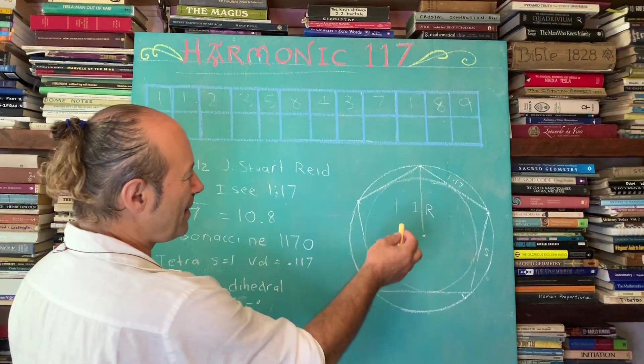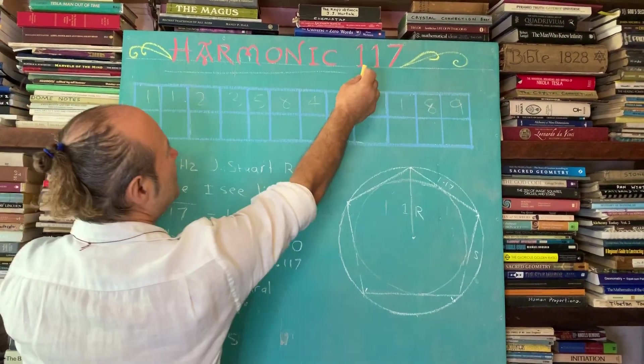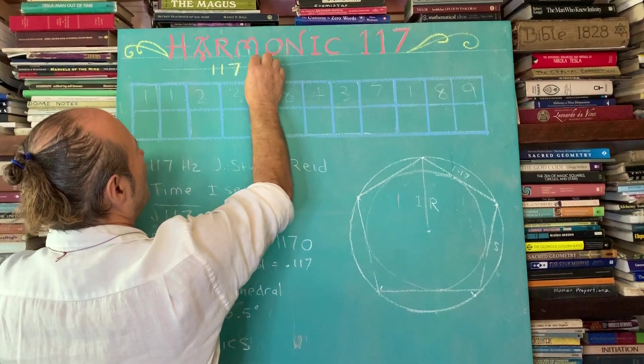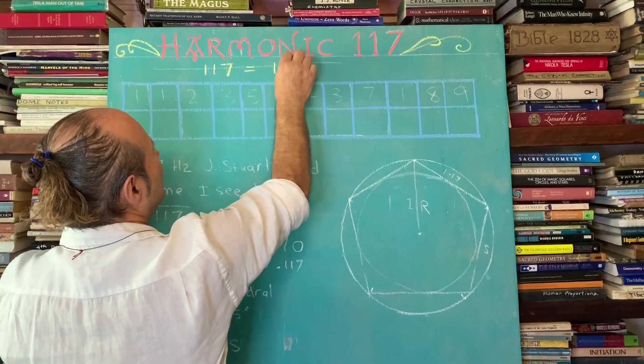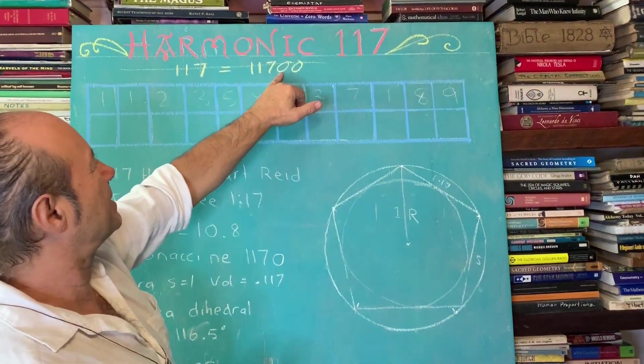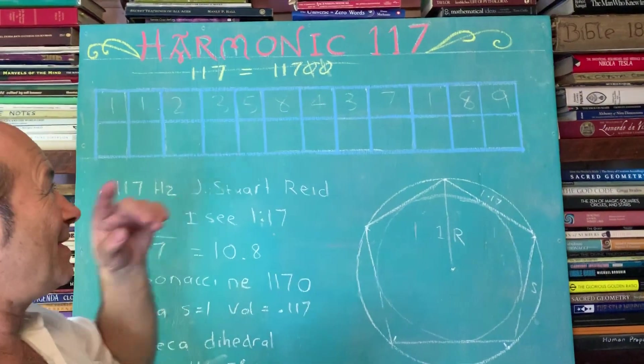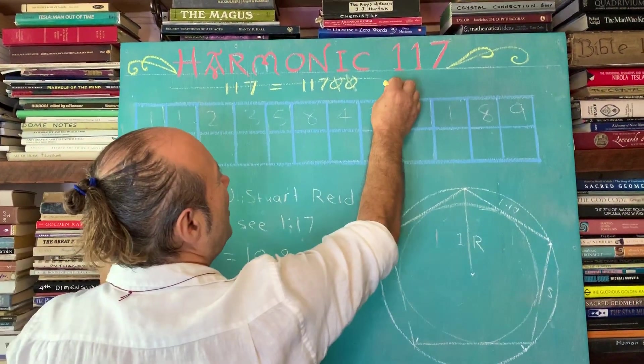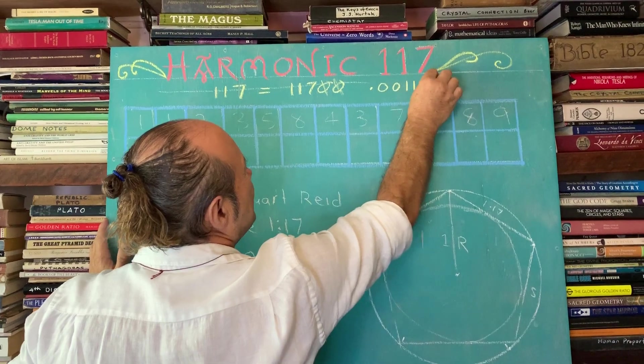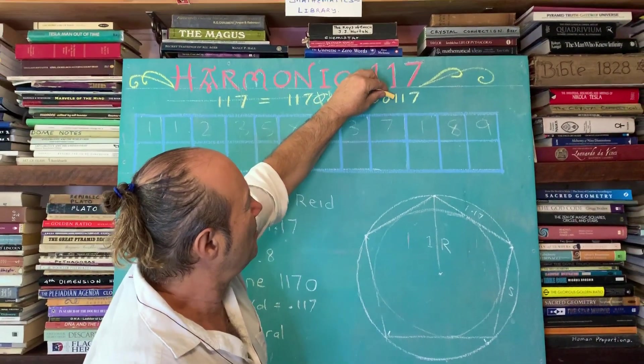First of all, in harmonics we're allowed to move the decimal. So 117 can also equal 11700, I can put two zeros on that, and it's still harmonics. We're allowed to get rid of the zeros, but we're also allowed to slide the decimal. So if I had 0.00117, I can move the decimal one, two, and put it there.